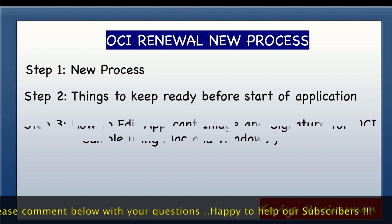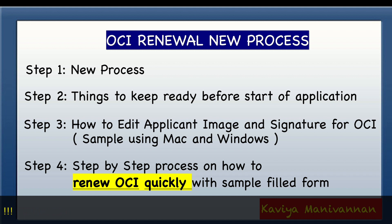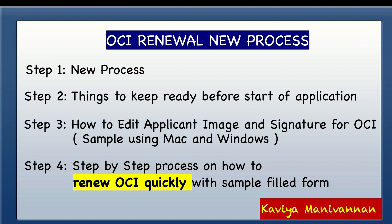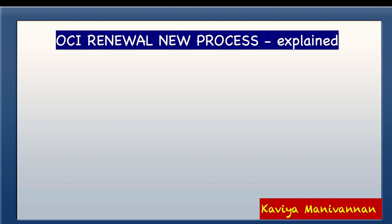These are the steps we are going to cover in this video. Step 1 is the new process. Step 2 is things to keep ready before you start filling the application. Step 3 is how to renew OCI — you need to upload applicant image and signature in a specific format, and I have shared how to edit images both in Mac and Windows. Step 4 is a step-by-step process on how to renew OCI quickly, with a sample filled form.